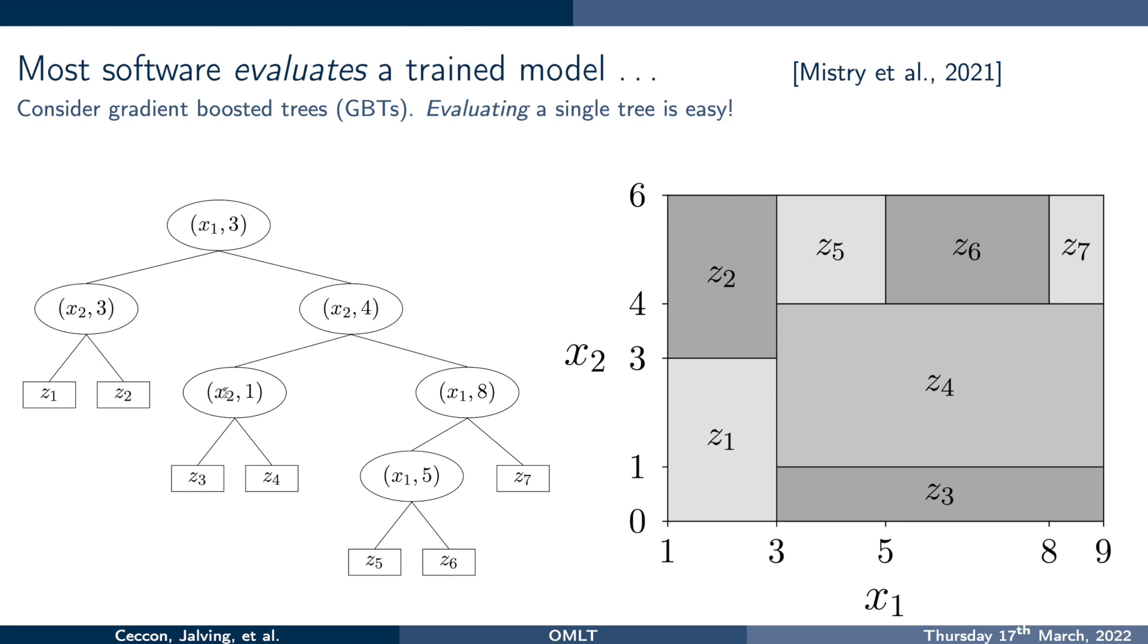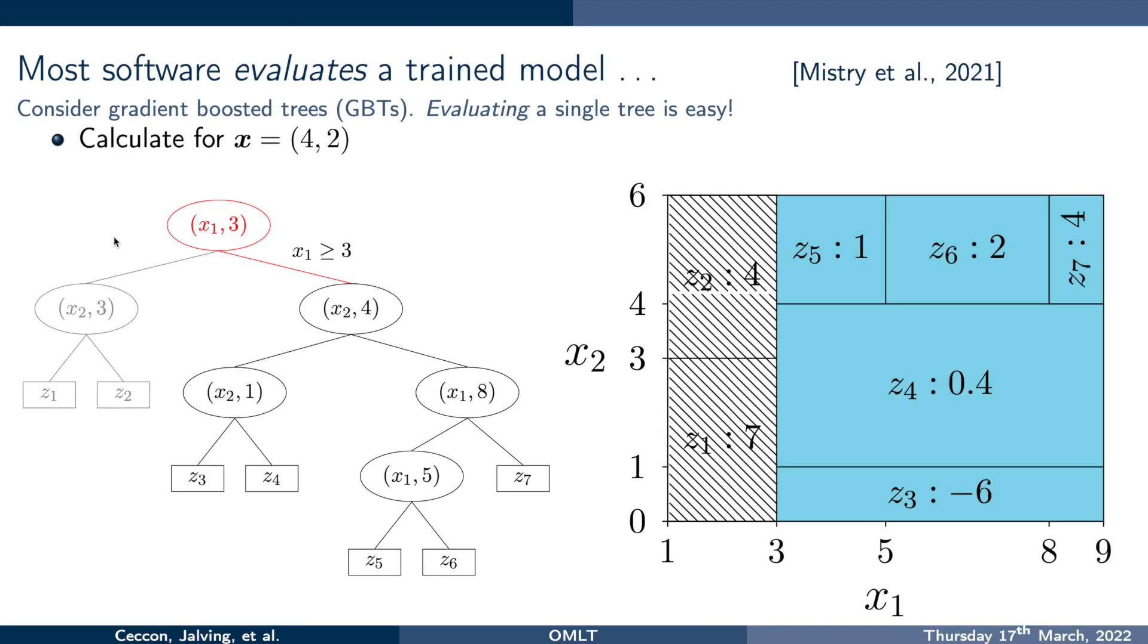Now, most software that is out there evaluates a trained model. And I'm going to use the example of gradient boosted trees here. Evaluating a single tree is really super easy. So let's say I want to know what is the value of this tree for the point (4,2). First, I ask myself up at the root node of this tree, is X1 less than 3, or is it greater than or equal to 3? Well, 4 is greater than or equal to 3, so I'm going to take the right branch. Then I get to another node, and it asks me to compare X2, which in this case is equal to 2, to 4.